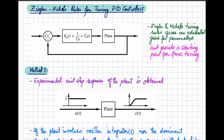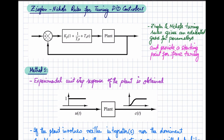In some cases Ziegler-Nichols does not give the exact response, but at least it gives an educated guess for the parameter values and provides a starting point for tuning rather than giving the final settings for Kp, Ti, and Td in a single shot. There are two methods given by Ziegler and Nichols to tune the PID controller.